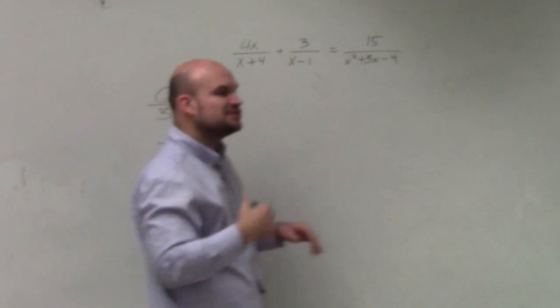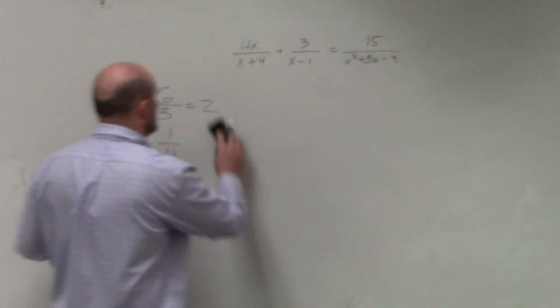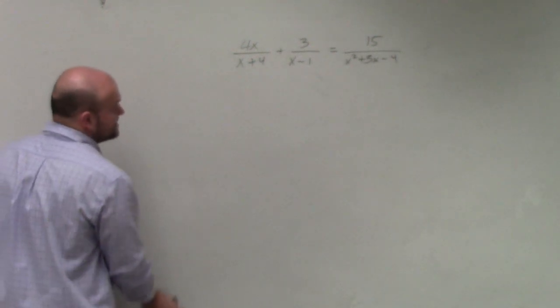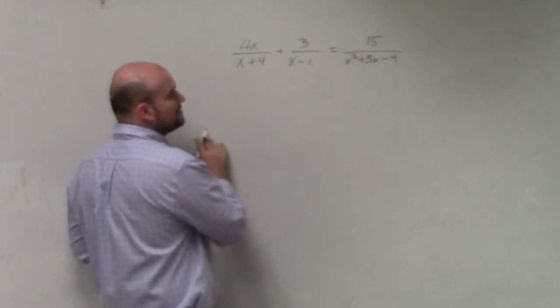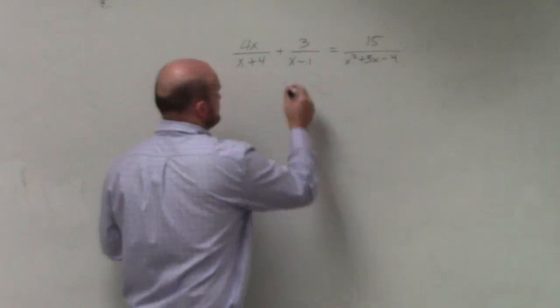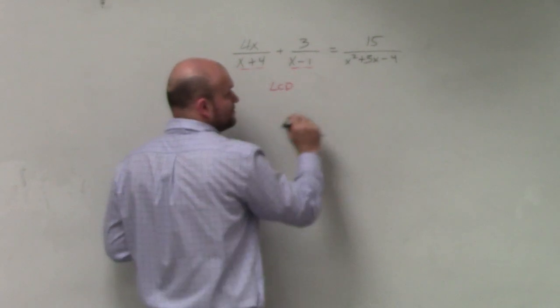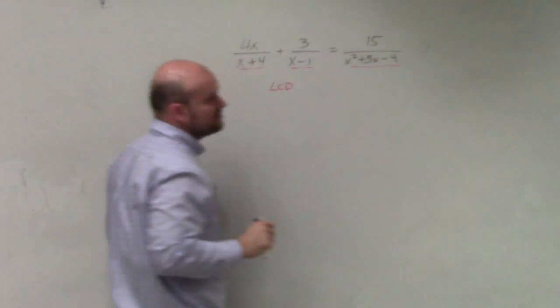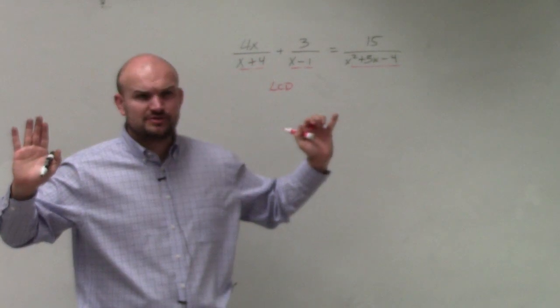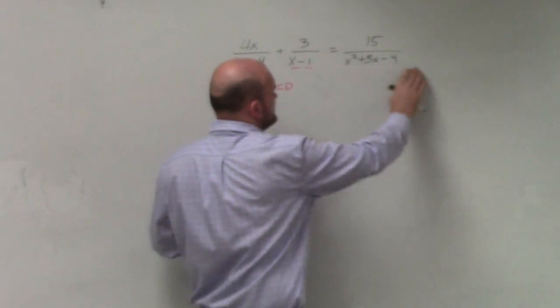However, let's create a number that it can divide into, which we call our least common denominator, least common multiple. So what we want to do is we want to find a number, which we'll call our LCD, that x plus 4, x minus 1, and x squared plus 3x minus 4 all divide into. But hold on, I just saw a trinomial. Should I just try to factor this real quick just to make sure? Yeah, because I never know. I might have to use this.